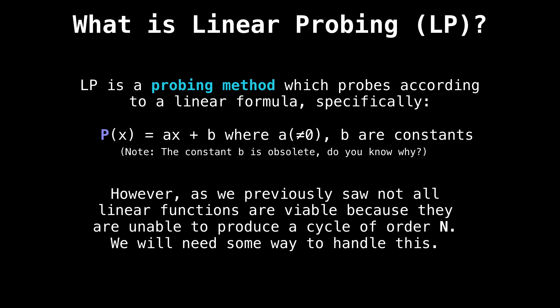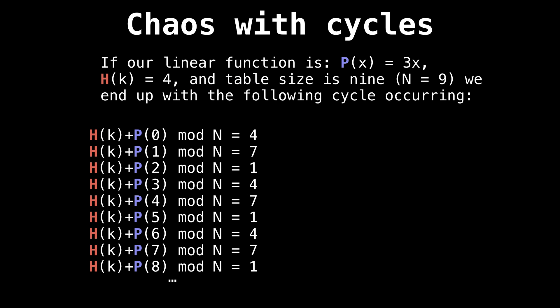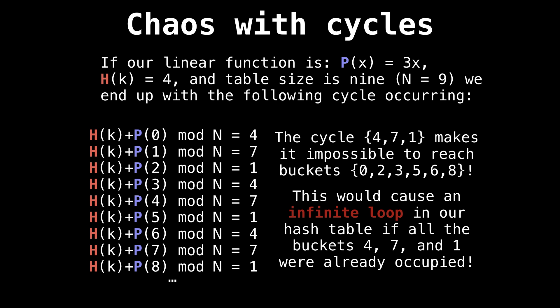As we saw in the last video, there's a slight problem with this currently. Some linear functions are unable to produce a full cycle of order N, and we might end up getting stuck in a cycle. Here's an example of that. If we picked our linear function to be P(x) equals 3x, and say our key k hashed to four, and our table size was nine, then we would end up with the following cycle occurring. Assuming that positions four, seven, and one are already taken by other key value pairs.